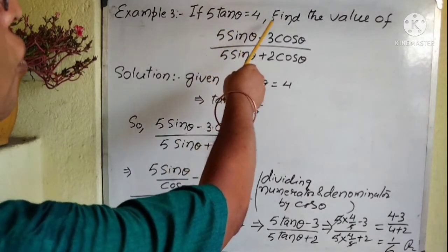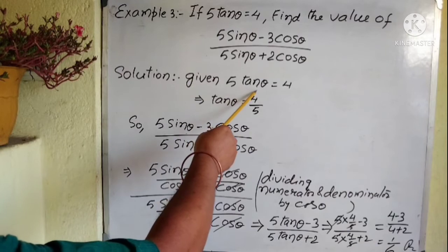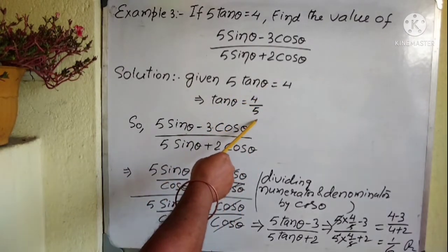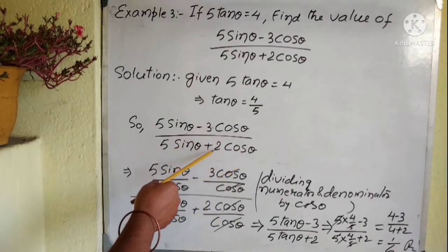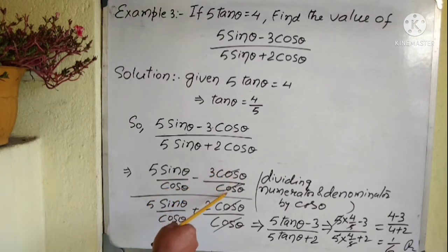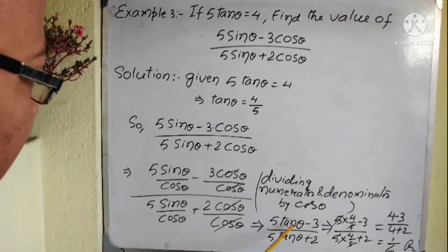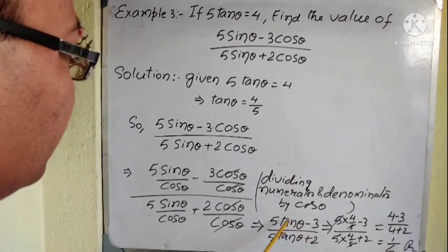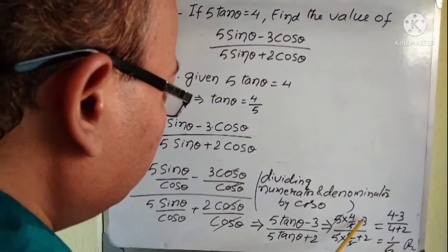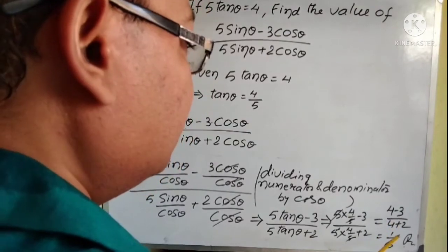Another example: Given 5 tan theta equals 4, find the value of (5 sin theta minus 3 cos theta) by (5 sin theta plus 2 cos theta). Since 5 tan theta equals 4, tan theta equals 4 by 5. Divide numerator and denominator by cos theta: this gives (5 tan theta minus 3) by (5 tan theta plus 2). Substituting tan theta equals 4 by 5: 5 into 4 by 5 minus 3 over 5 into 4 by 5 plus 2 — the 5s cancel — giving (4 minus 3) by (4 plus 2), which is 1 by 6.